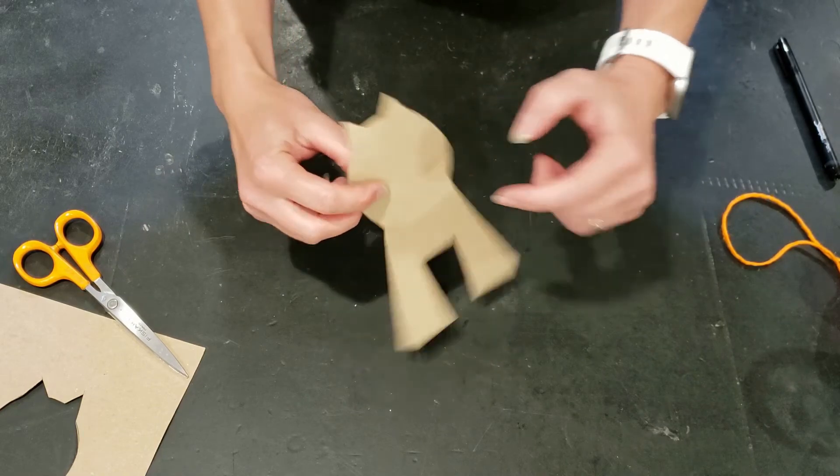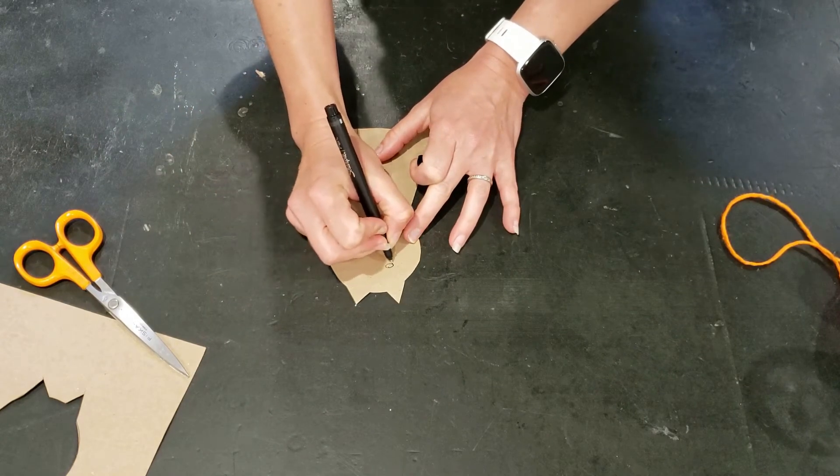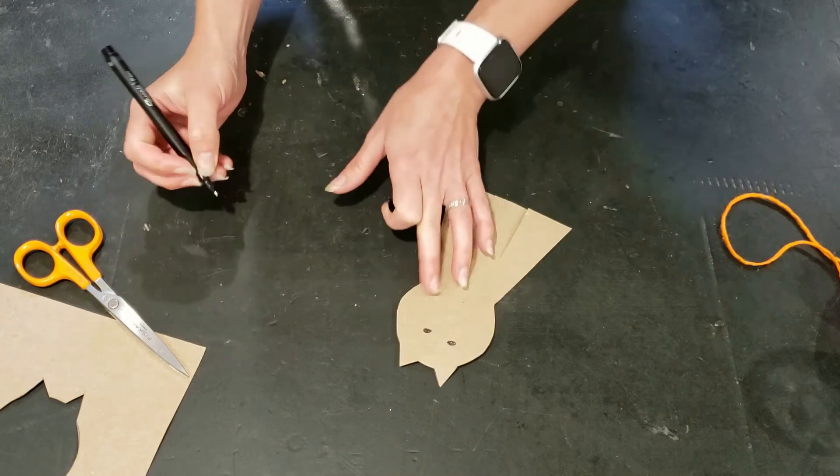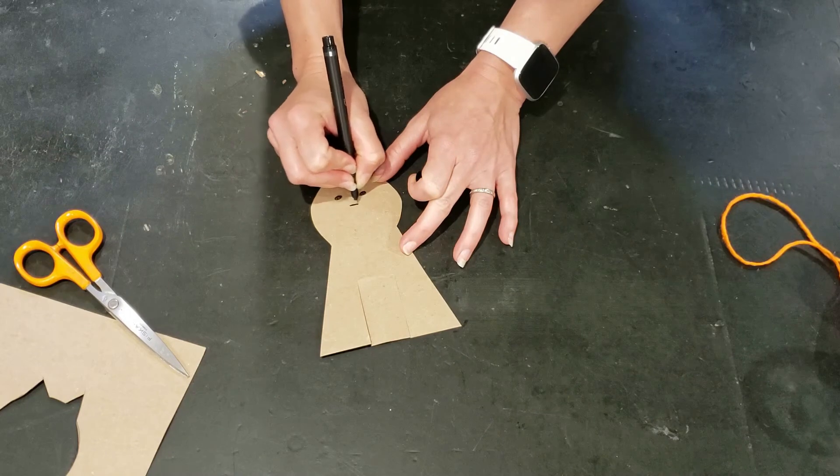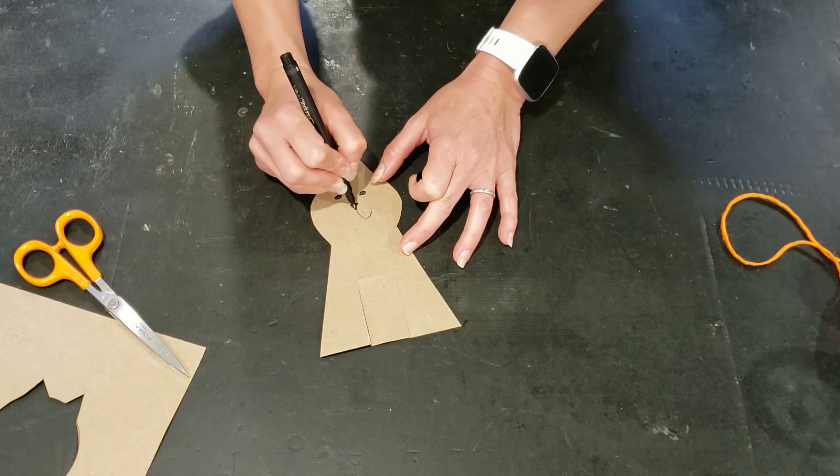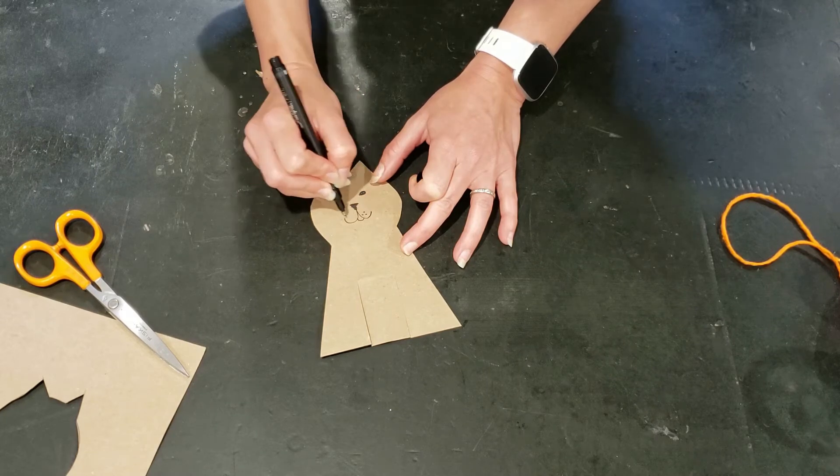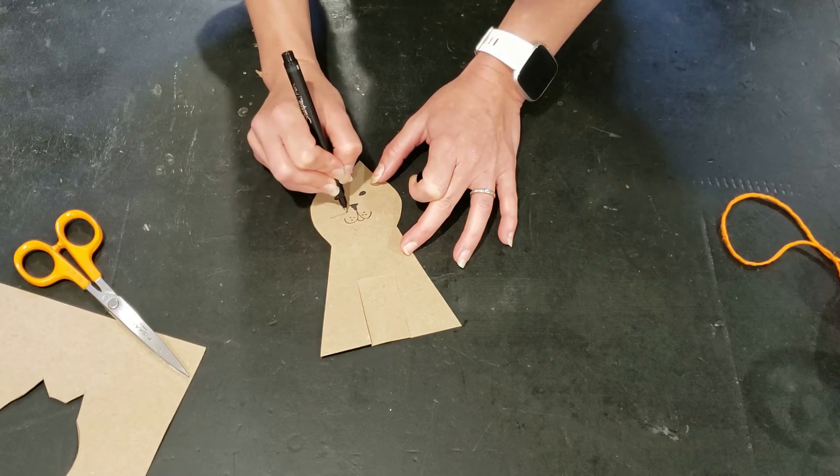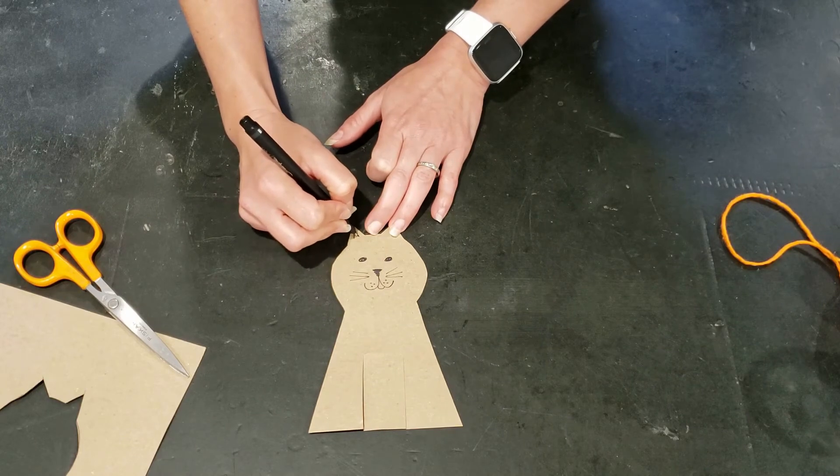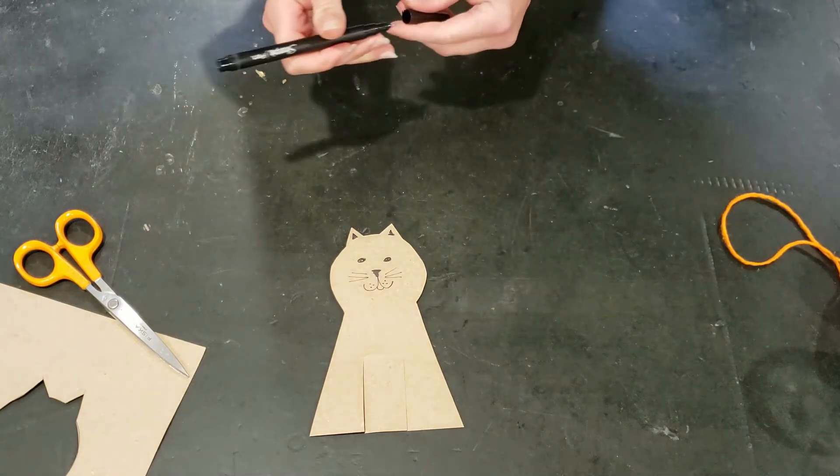So now we're going to add some facial details to our cat. Go ahead and draw a face on your kitten. You can do this with black or colorful markers whatever you prefer. I'm just going to use a black marker to make some eyes and a fun little mouth for my kitten. And I'm going to add a little freckle detail and some whiskers. And I'm also going to color in my cat's ears because I like that look. But you can color it as much or as little as you want.